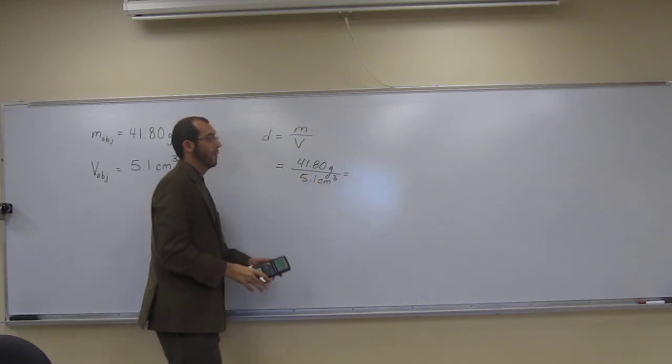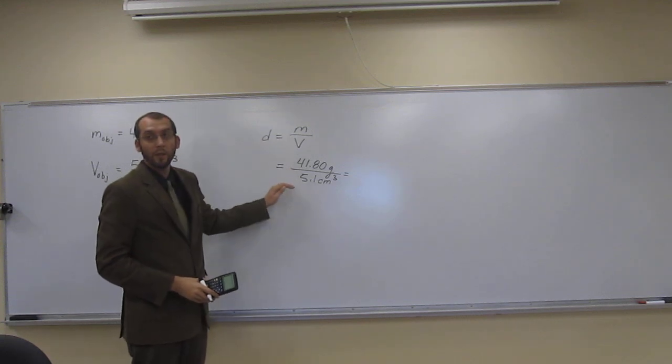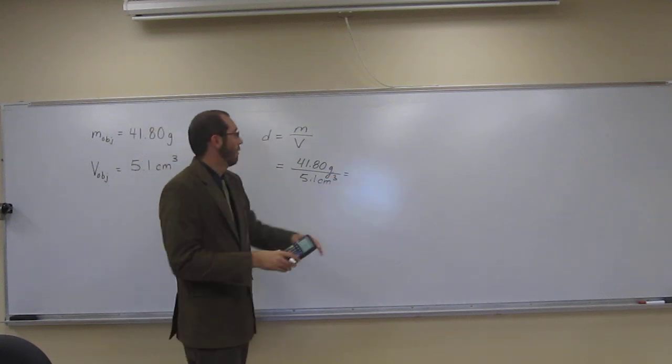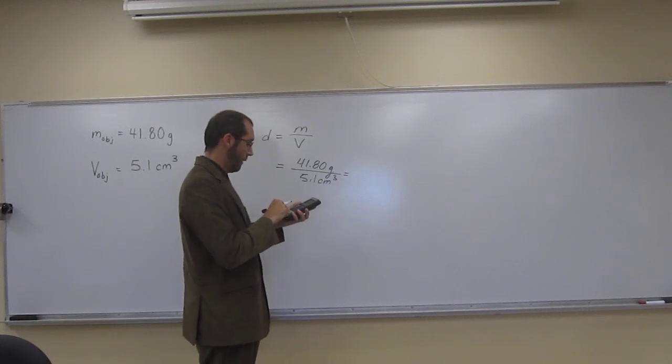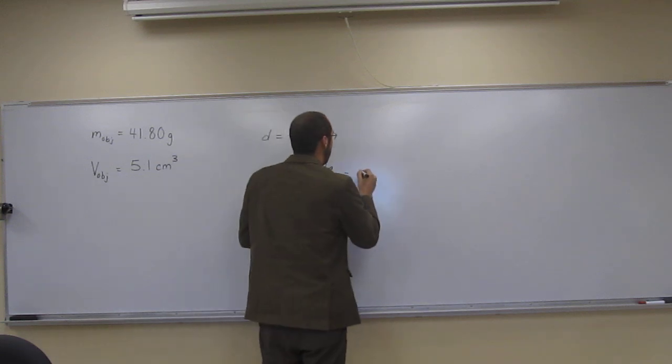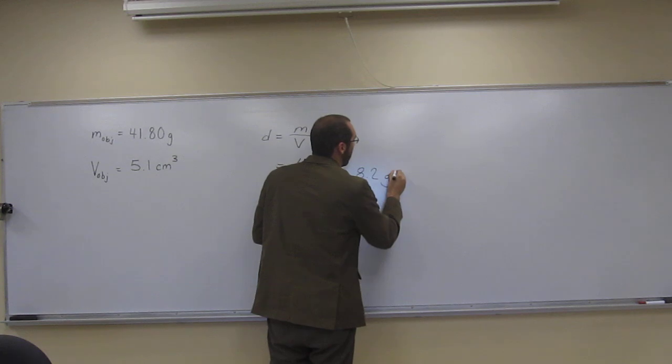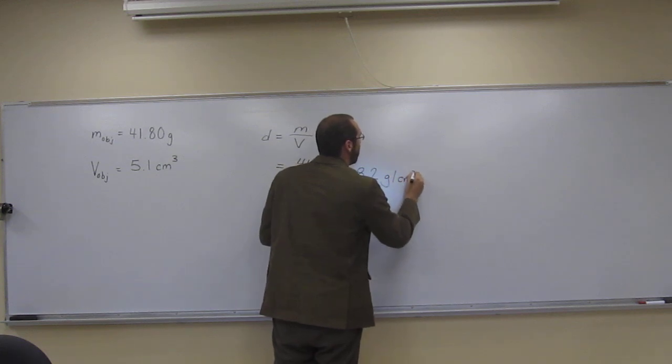Because we've got four sig figs, two sig figs, this should be two sig figs, right? Okay. So let's do this together. 41.80 divided by 5.1 equals 8.2 grams per cubic centimeter.